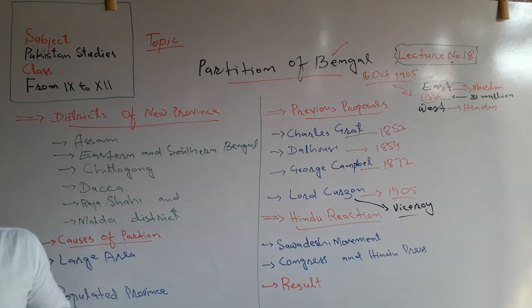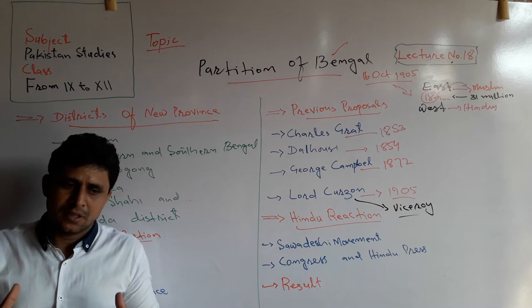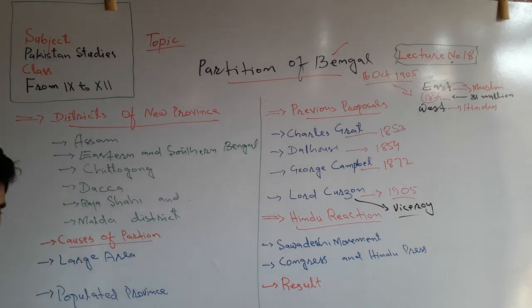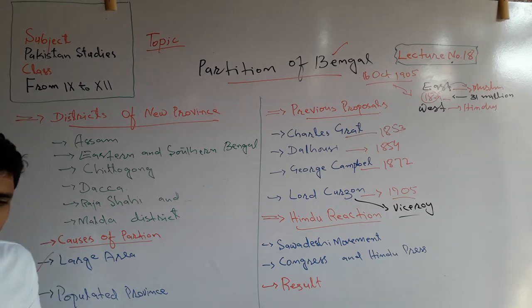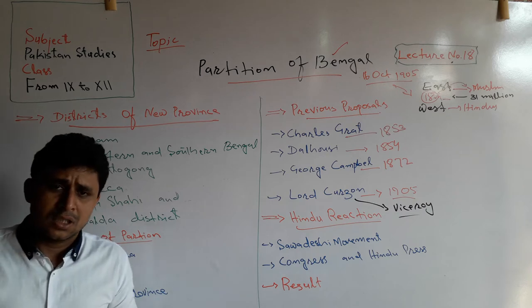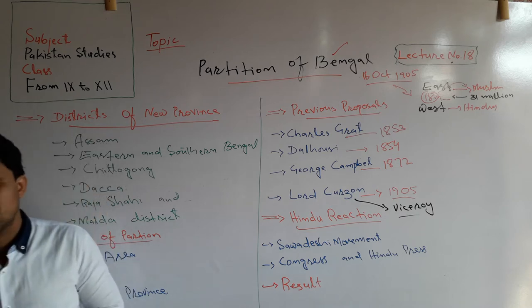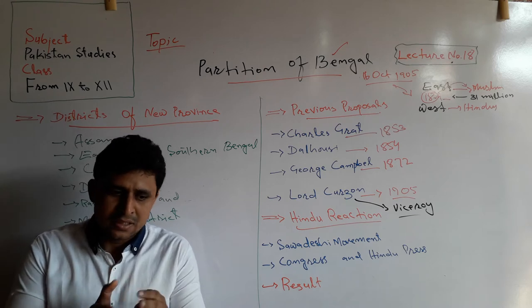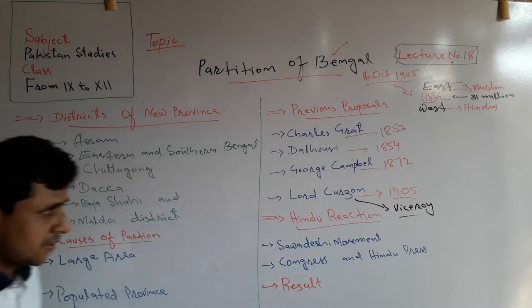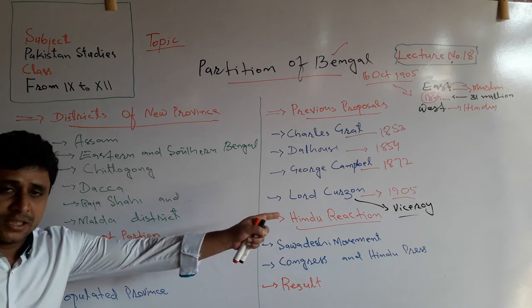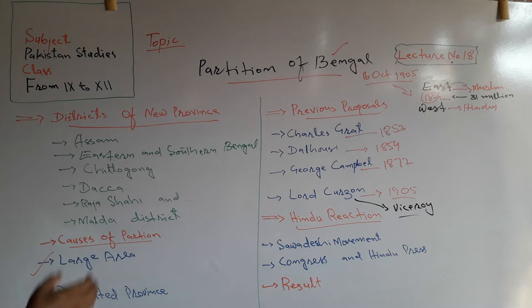Bengal was partitioned and many British people also wanted to divide it for certain reasons. The main reason was its large area — Bengal was a large province and a single Lieutenant Governor could not rule and maintain law and order in such a large province. That is why it was decided to partition it, and Lord Curzon divided it in 1905 on 16 October into two wings: East and West. In the East wing, Muslims were in majority.